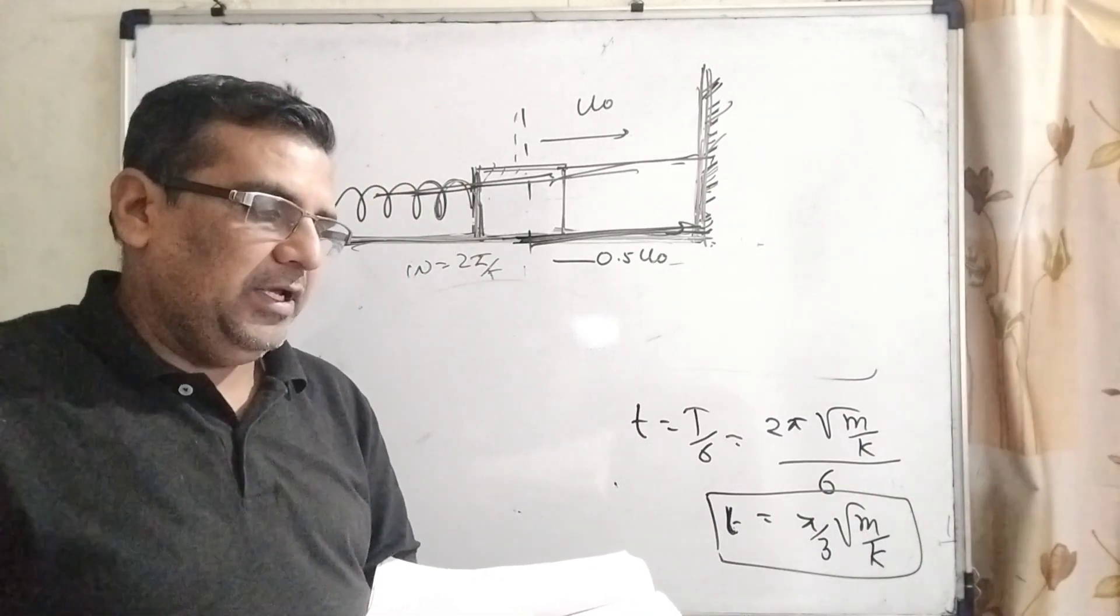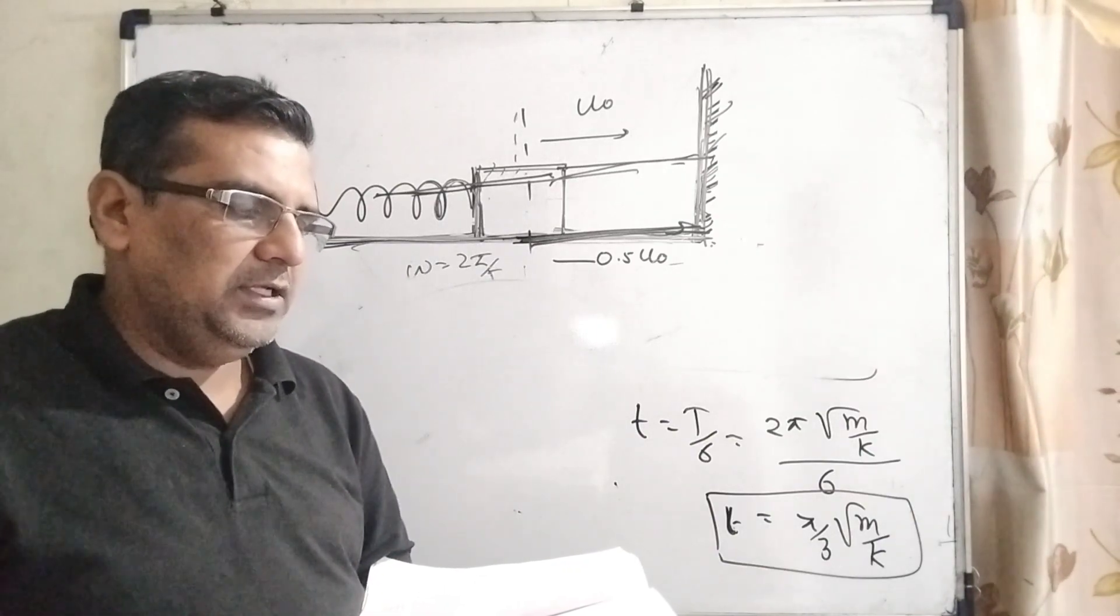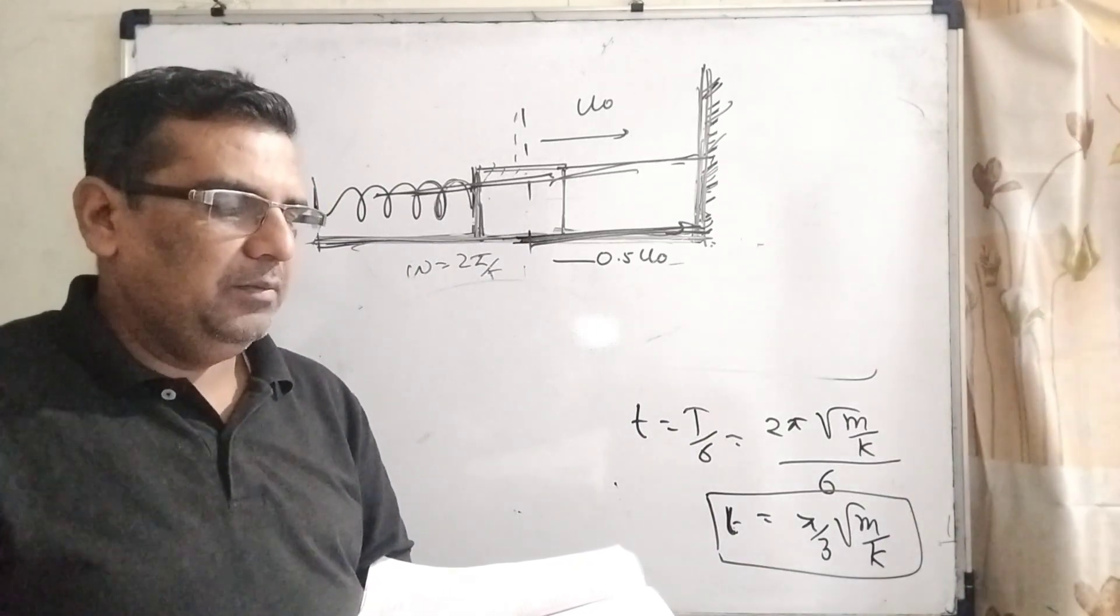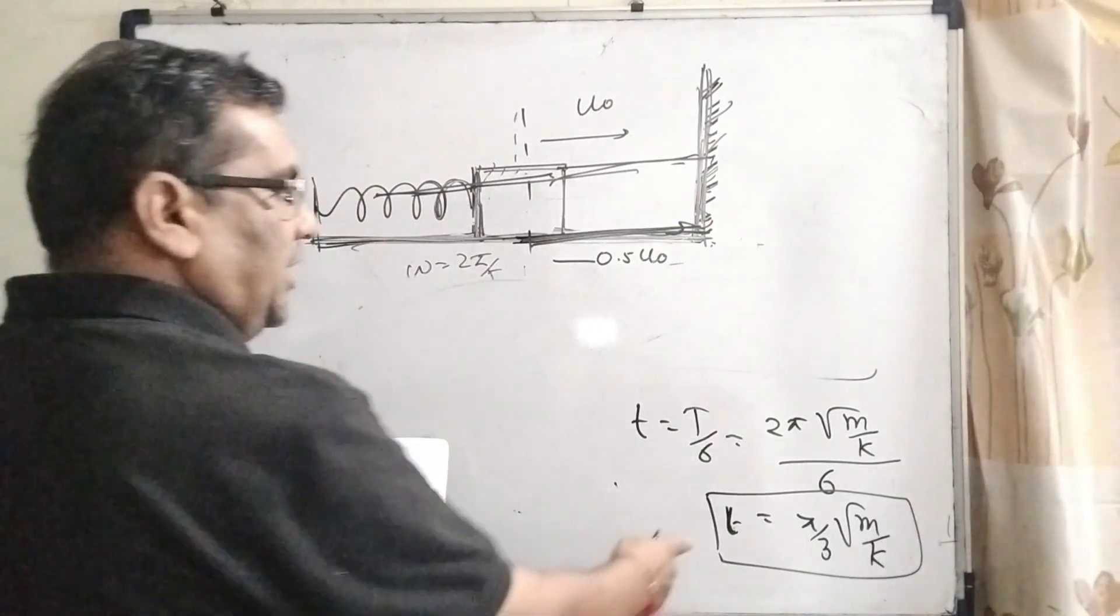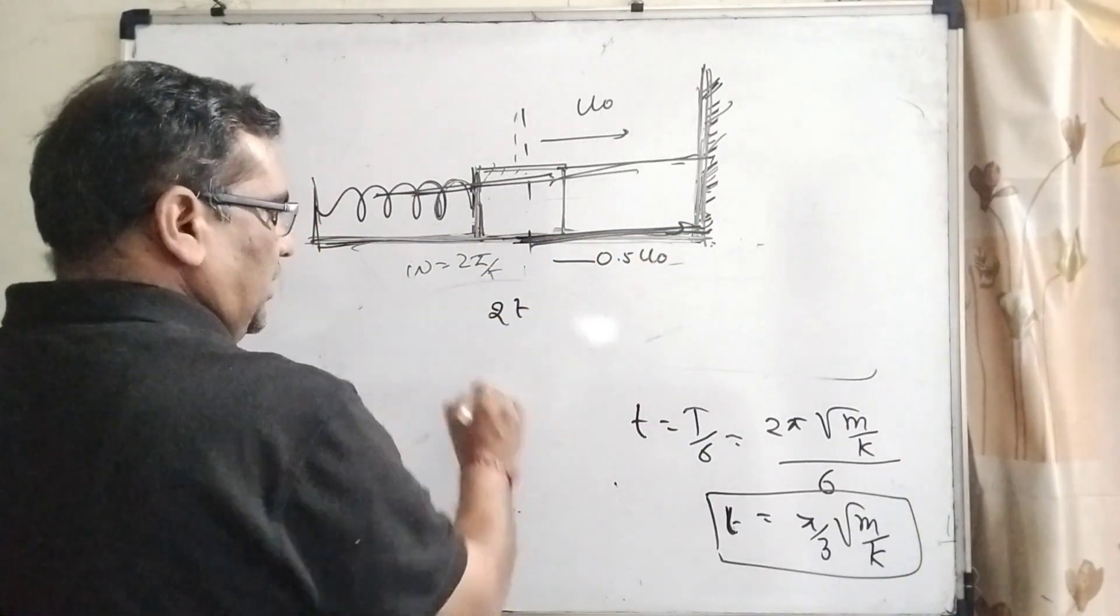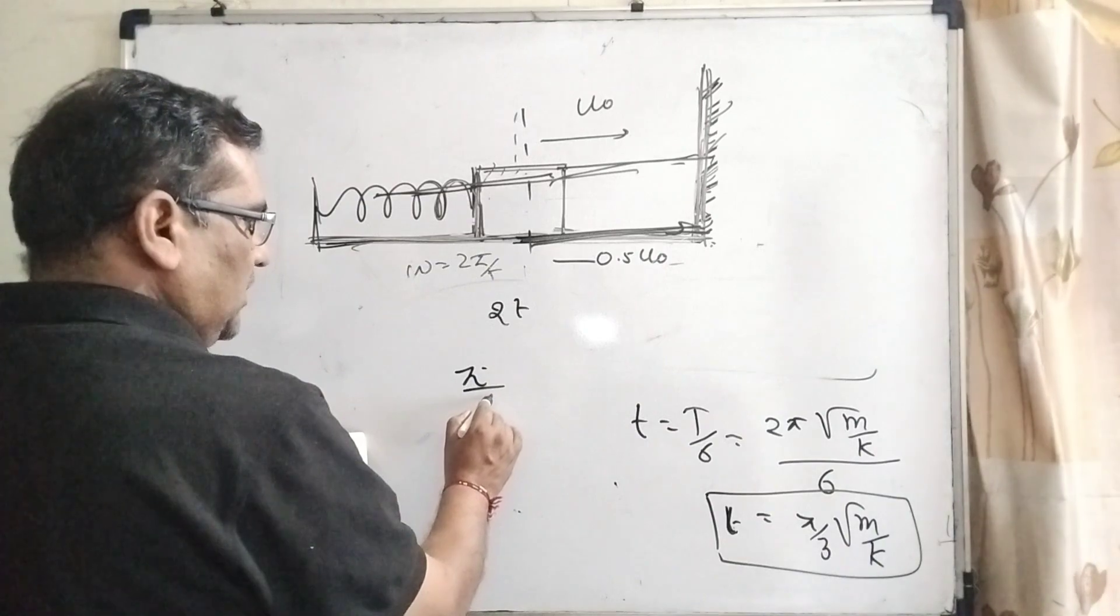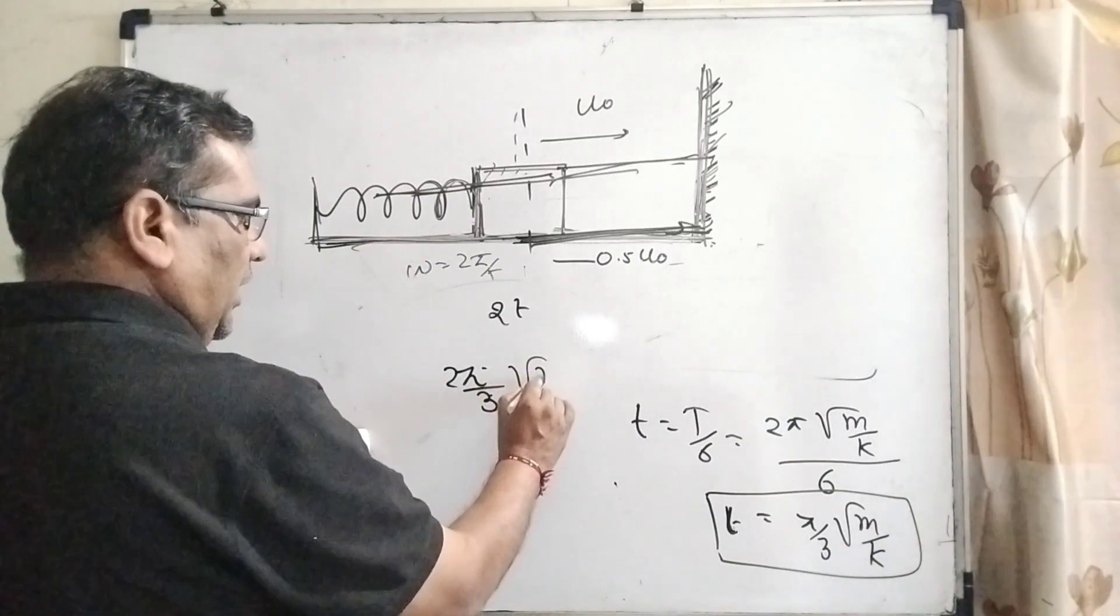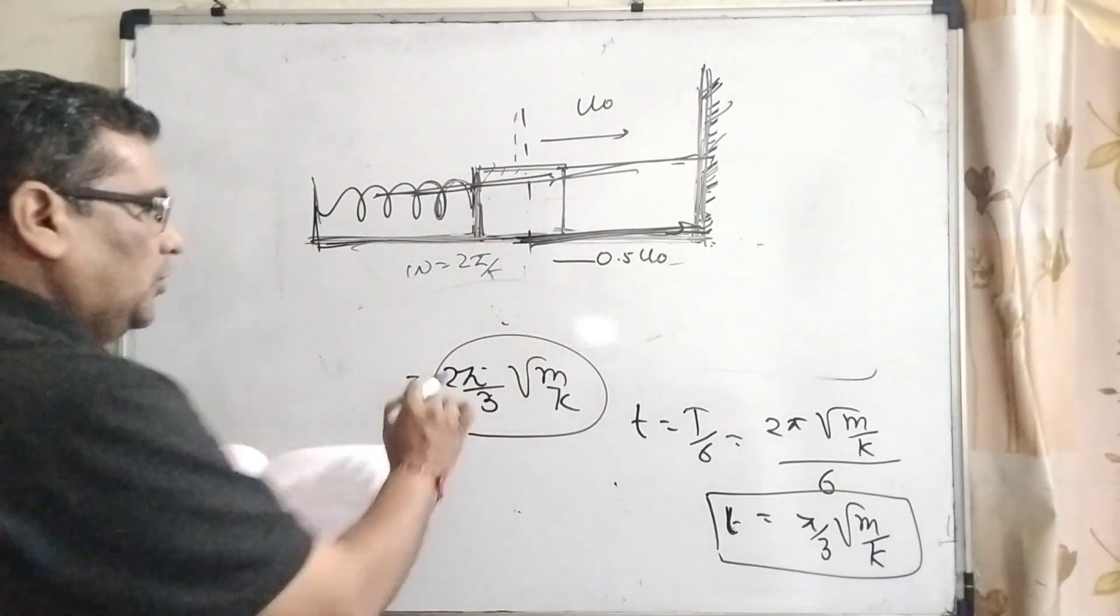The time at which the particle passes through the equilibrium position for the first time is t equal to pi into root m by k. You can see that here the time period t equal to pi by 3 m by k when it strikes and then comes back means 2t, then it becomes 2 pi by 3 root m by k. So therefore this option is also wrong.